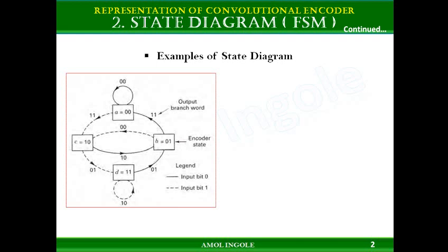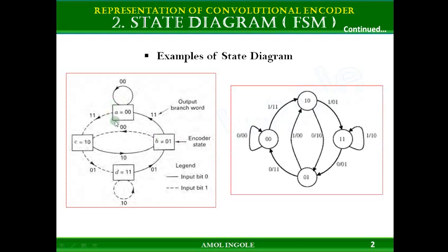These are a few examples of state diagrams. Here a box is used to show the state, and here a circle is used to show the state of the encoder. Darker and dotted lines are shown for input bit 0 and input bit 1 respectively. There is also another way of showing input and output: you can use all dark lines by showing the input bit and the corresponding output bit separated by a slash — input bit, slash, then the output.